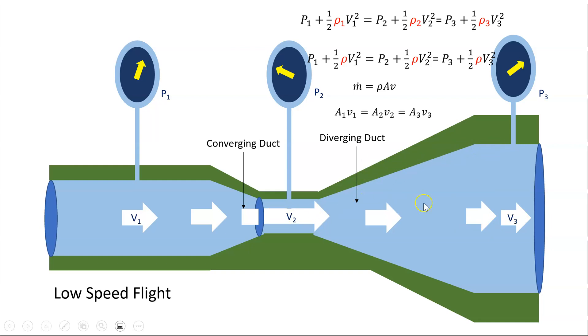And just notice, this is a diverging section. So with a diverging section, the area is getting bigger, therefore, the velocity is getting smaller. And if the velocity is getting smaller, then the pressure must be increasing.